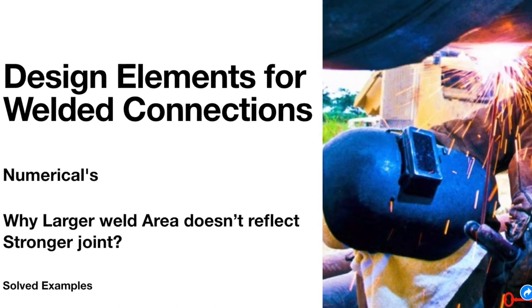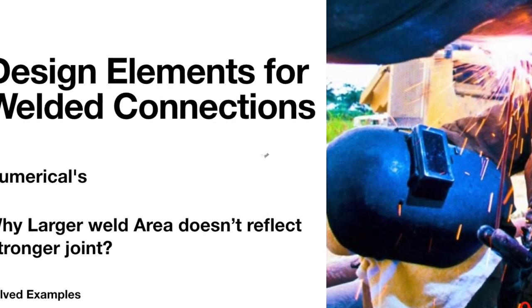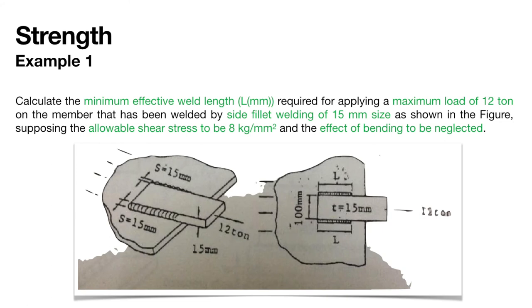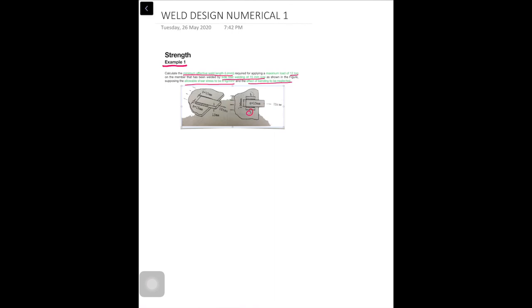We are going to solve some numericals for fillet joints. In example number one, we are given a fillet weld and we are required to calculate the minimum effective length L to apply a maximum load of 12 tons on a member that has been welded by side fillet welding, with a 15 millimeter size as shown in the figure. The allowable shear stress is 8 kilogram per millimeter square and the effect of bending is to be neglected. In the diagram we have got two lengths.